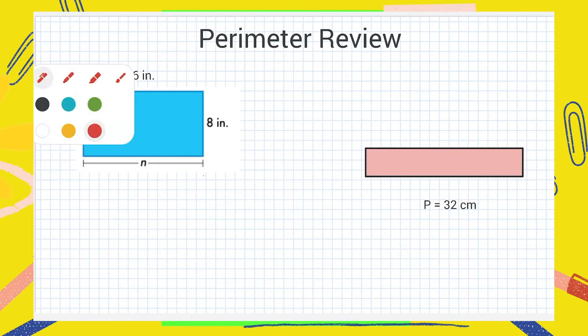I can tell from the information given to me that this rectangle has a perimeter, a total perimeter of 66 inches. That means the total distance around this rectangle is going to be what? 66 inches. Very good. I only know one of the side lengths, 8 inches. But because it's a rectangle I know that if this side is 8 inches then so is the corresponding side. This is also 8 inches.